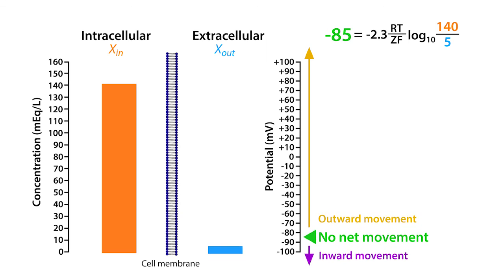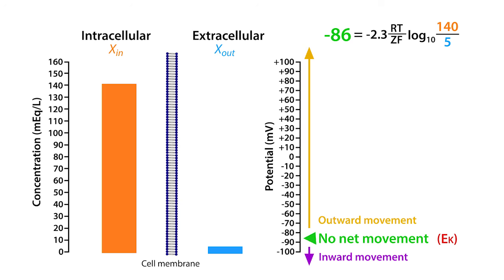The equilibrium potential for potassium ions is minus 86 millivolts when the intracellular and extracellular concentrations are 140 and 5 milliequivalents, respectively. At this equilibrium potential, potassium ions will move out of the cell down their concentration gradient when the electrical potential is less negative than the equilibrium potential.